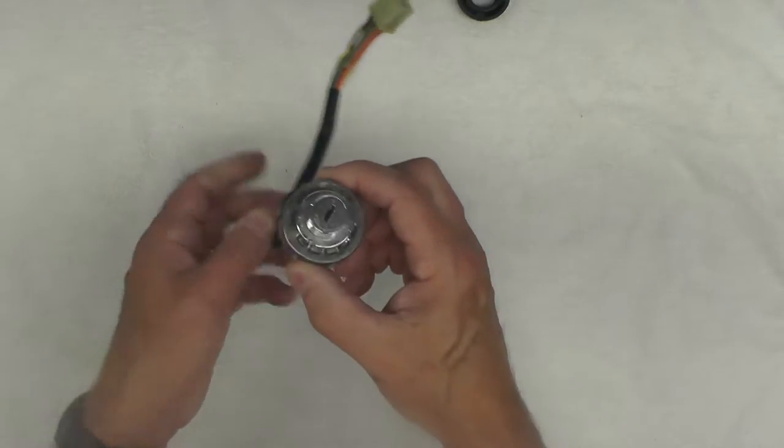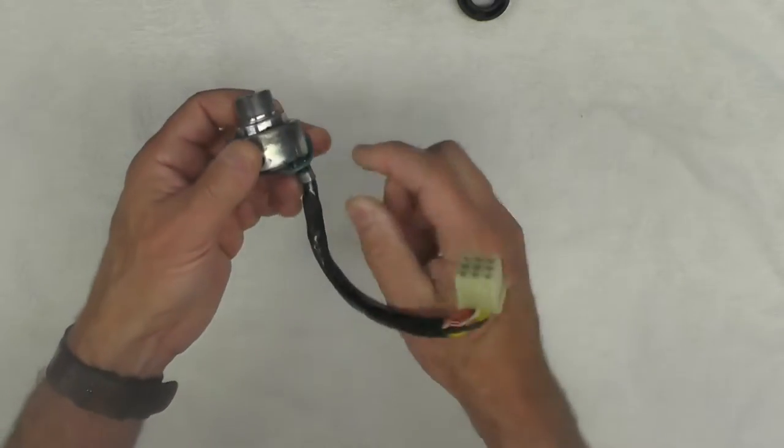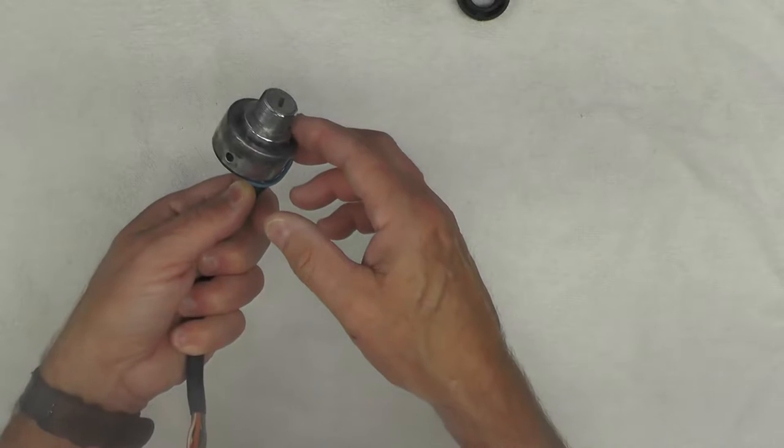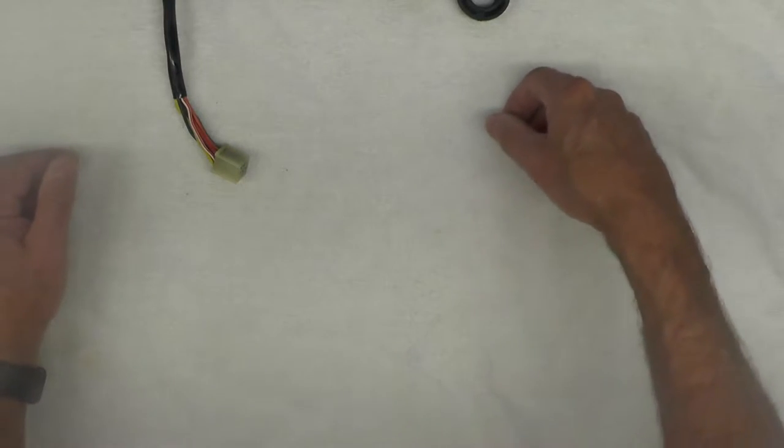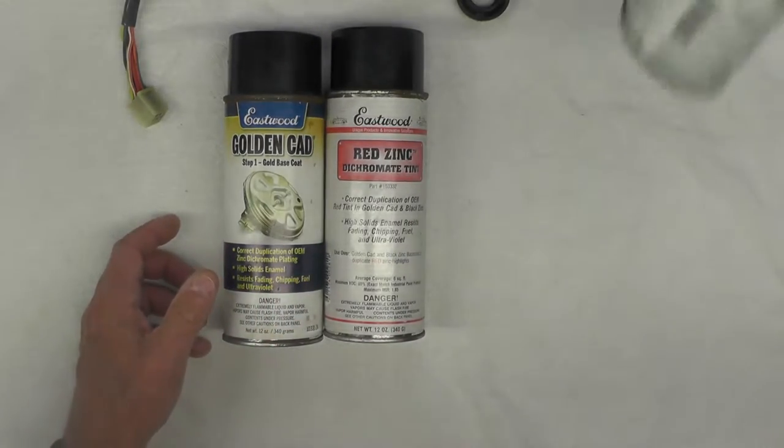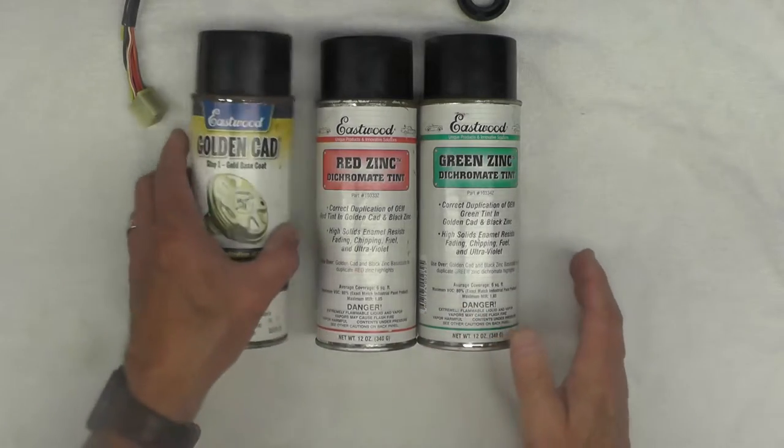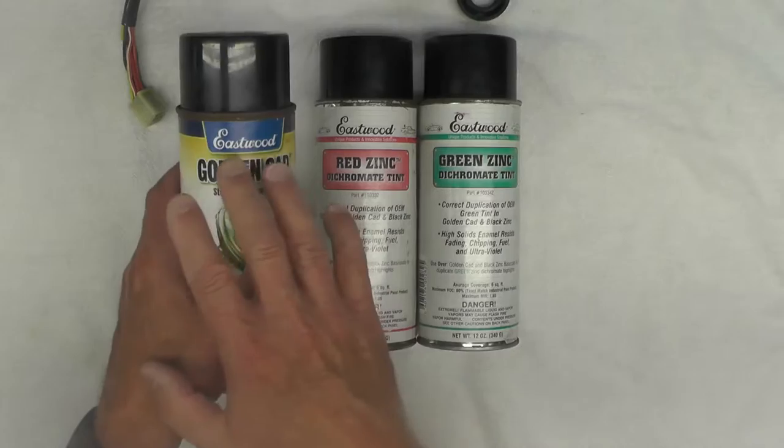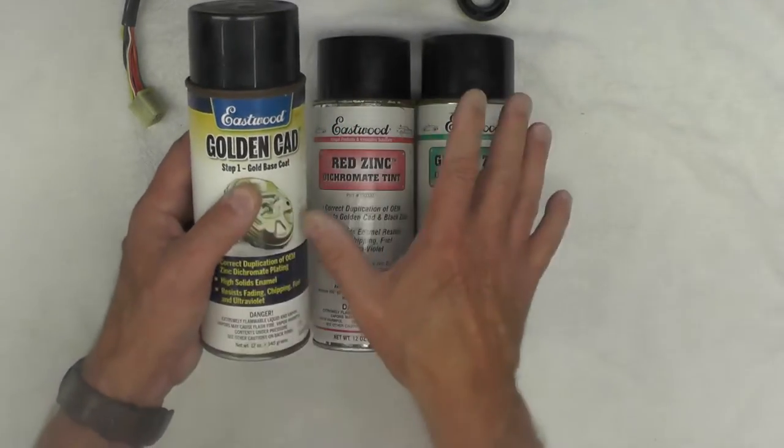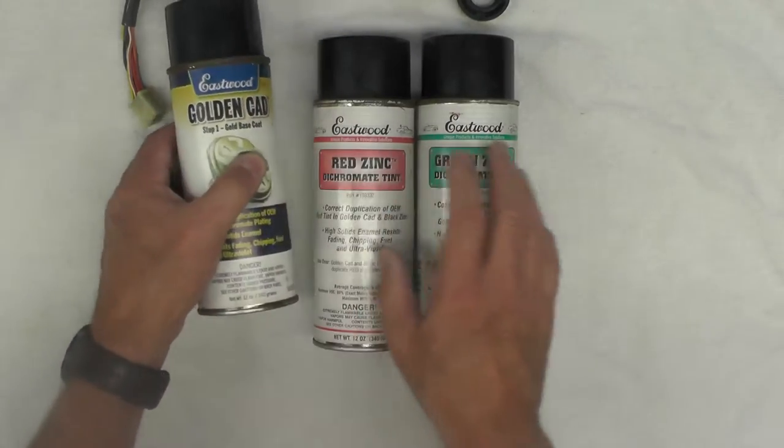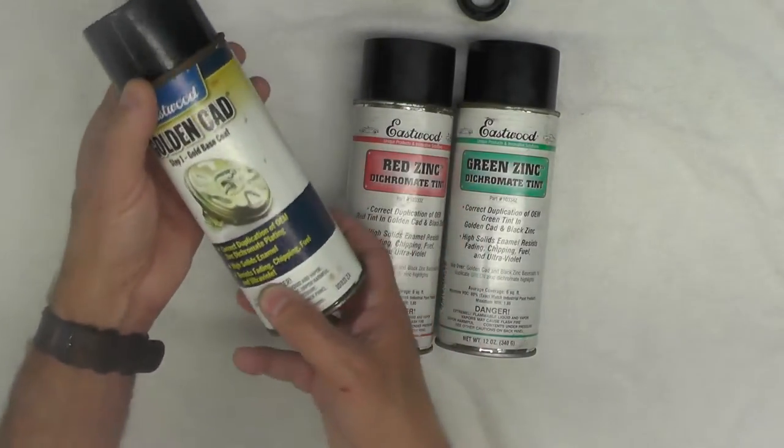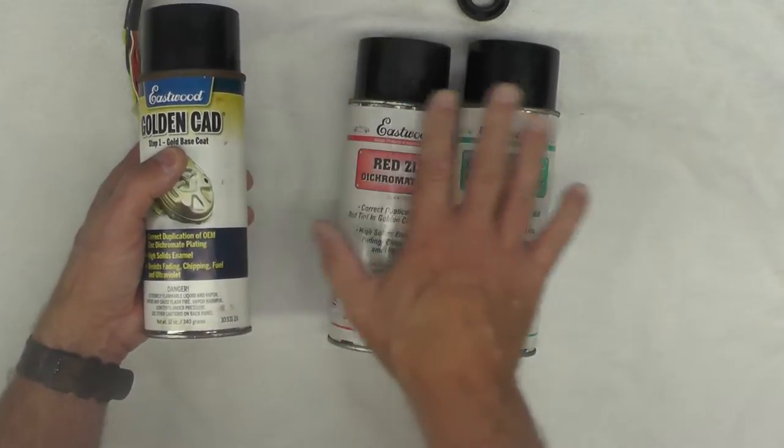We're going to focus today primarily on this piece, and that is how am I going to refinish this to emulate the original gold zinc dichromate appearance. Now, you have probably heard me talk about the Eastwood products called Golden Cad. Right here you can see them. It's a three-part process. This is the gold, and you lay down. This is not intended as a tutorial on how to use the product, but I have used this before. I think I've talked about it before, and it does work. It's paint. You lay down the gold base coat, and then you come back and highlight it with the red and the green. I'm out of the gold, because you use more of this than you do of these two. The red and the green are really just highlight colors.